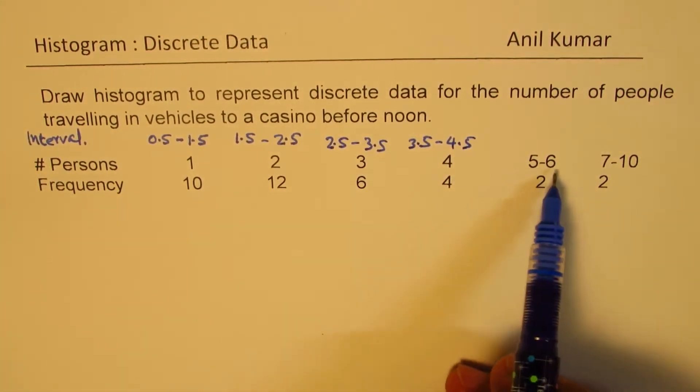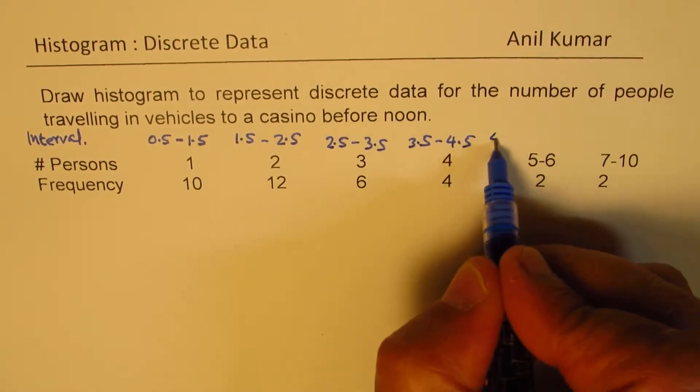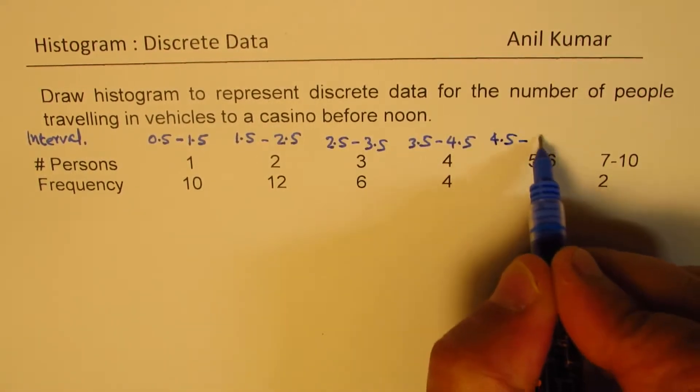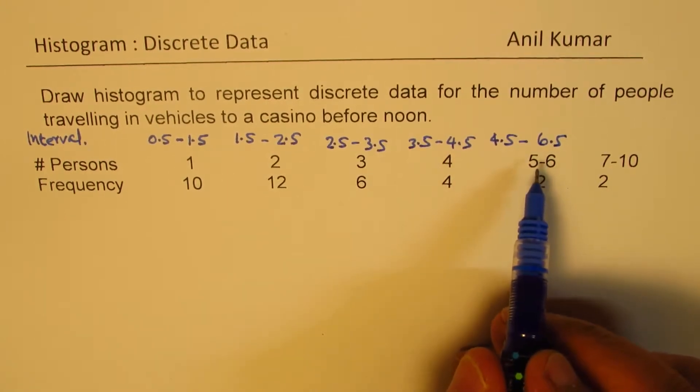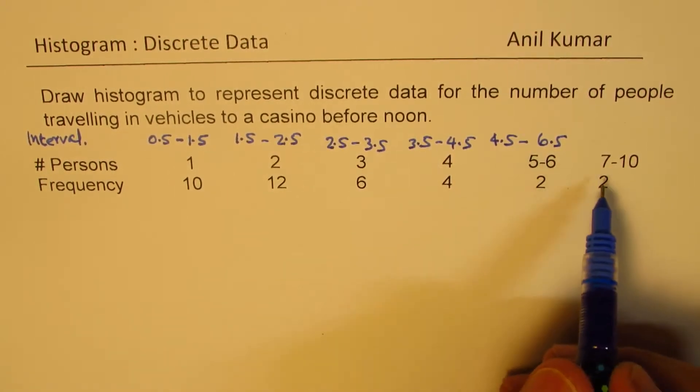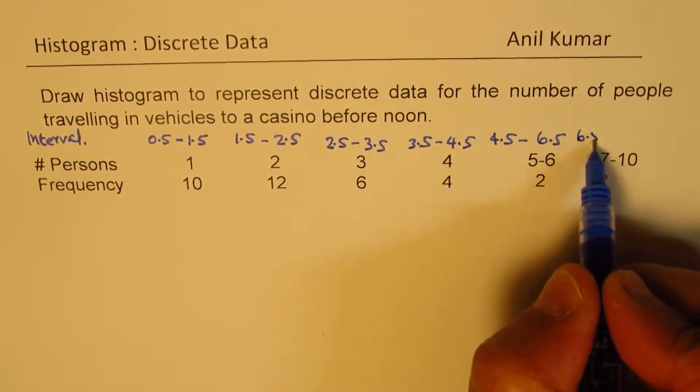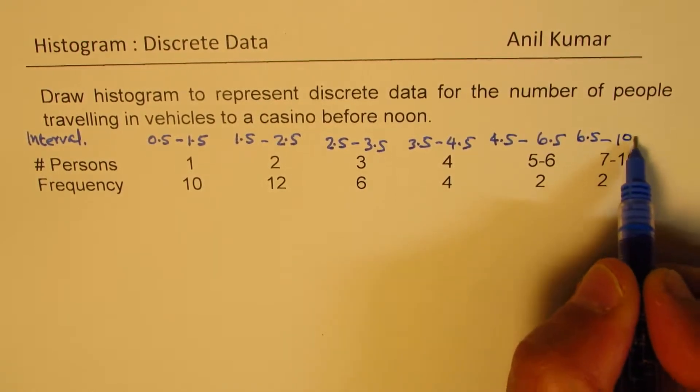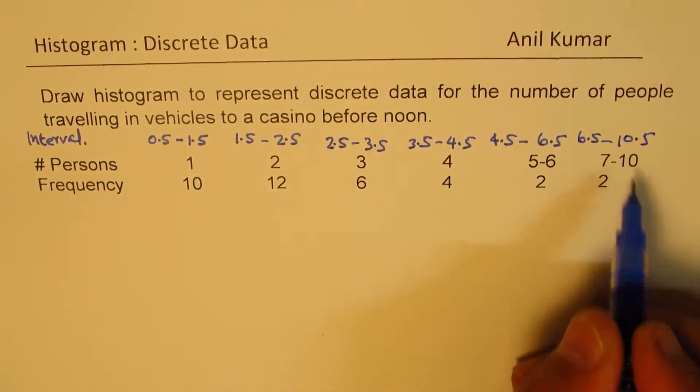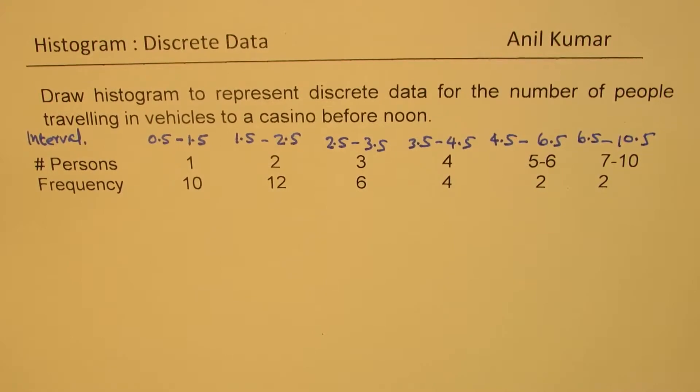But when we have 5 to 6 persons, we could consider this as from 4.5 to 6.5, right? So we have unequal widths also. And then from 6.5 to 10.5, so that we could take care of 7 to 10 persons. Is that clear to you? So we have this.